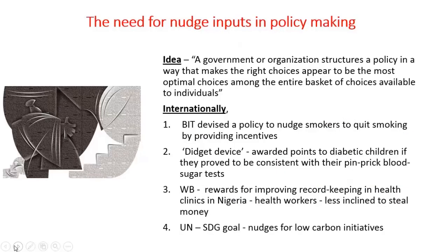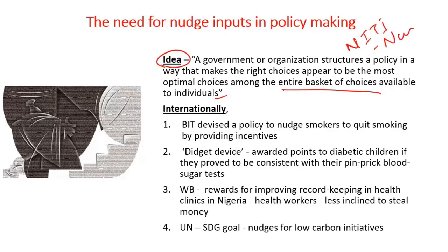The government's idea while undertaking any policy decisions should be to pick the right choices from an entire basket of choices available before individuals. This idea has been reinforced by NITI Aayog through the proposal of introducing nudge units to improve policy making in India, which was proposed in 2016.